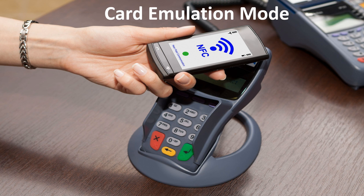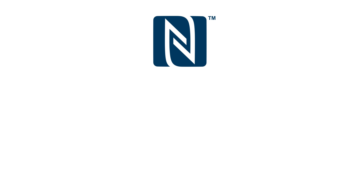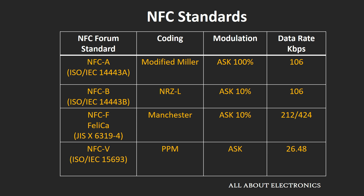In NFC, certain standards are defined to establish communication between devices. These standards define parameters like the operating carrier frequency, coding scheme, modulation technique, and data rate for information sharing. These standards are derived from existing radio communication standards and are known as NFC-A, NFC-B, NFC-F, and NFC-V. A table summarizes the key parameters defined under these standards.